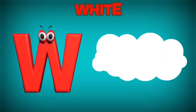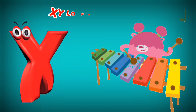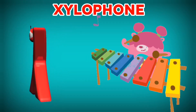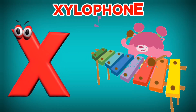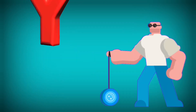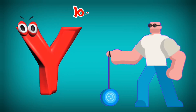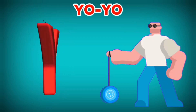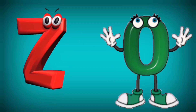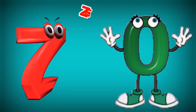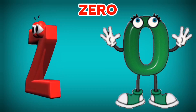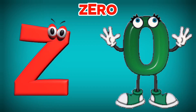W is for White. W, W. White. X is for Xylophone. X, X. Xylophone. Y is for Yo-yo. Yo, yo. Z is for Zero. Z, Z. Zero.